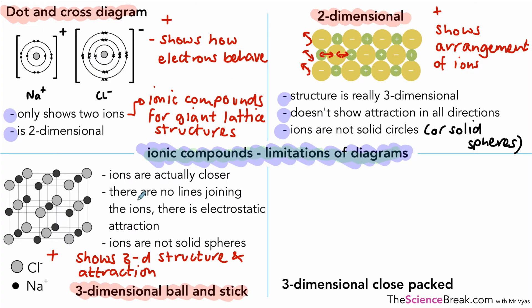The problem with this diagram is that the ions are actually closer together. There aren't actually lines or sticks joining the ions together; there are electrostatic forces of attraction. And again, the ions are not solid spheres.